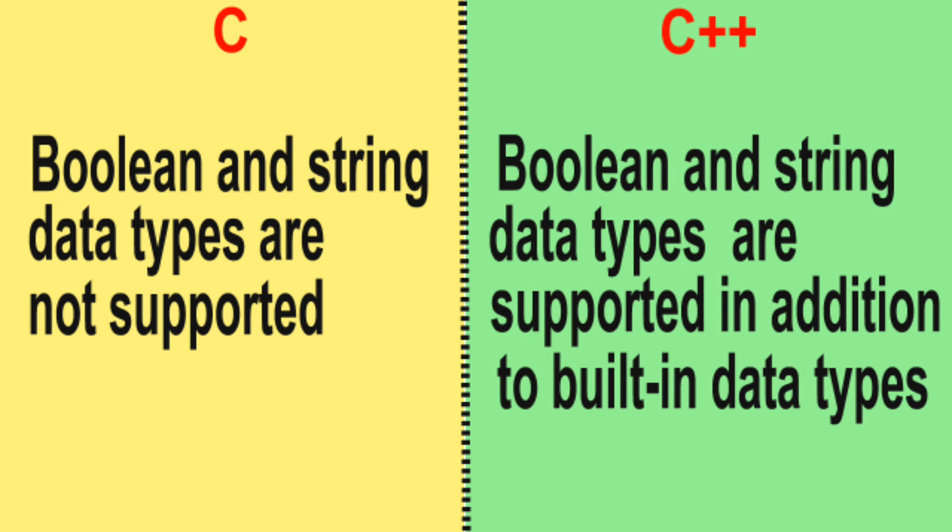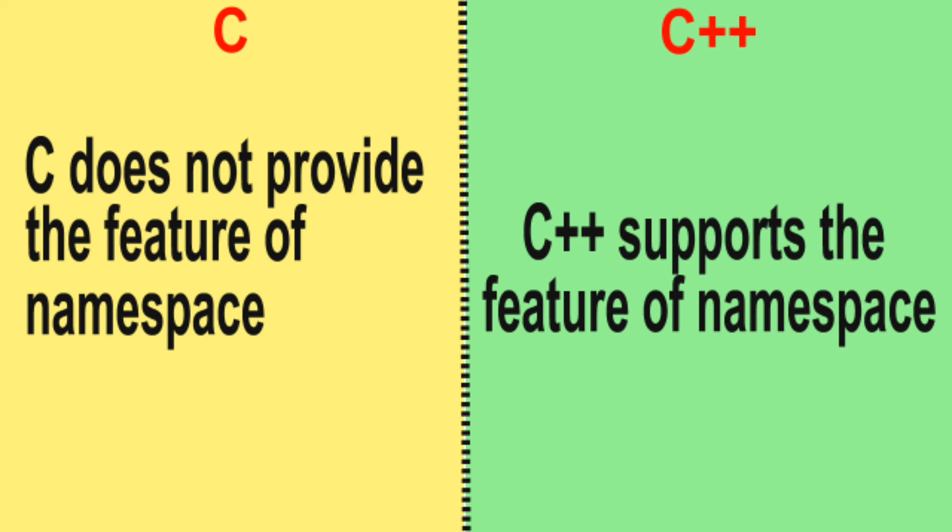Difference number 10: In C, boolean and string data types are not supported. In C++, boolean and string data types are supported in addition to built-in data types.